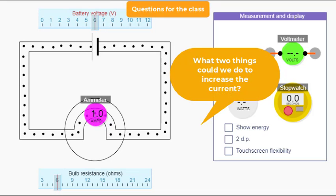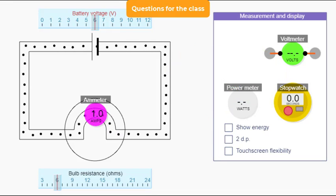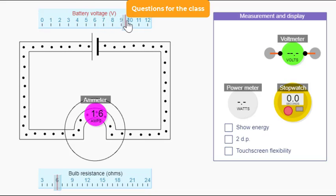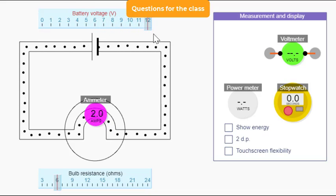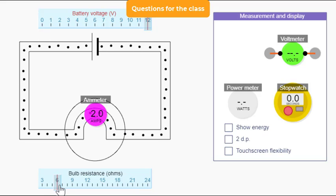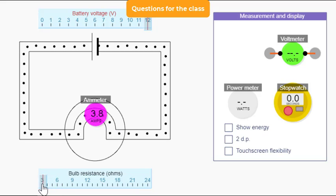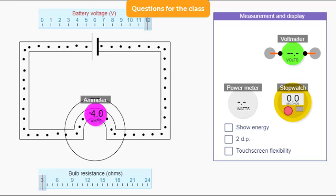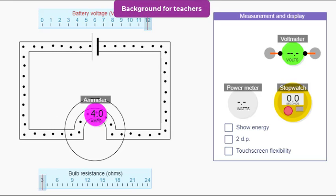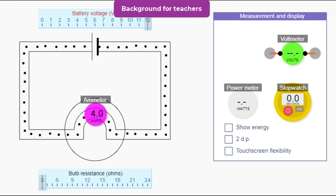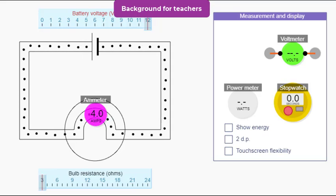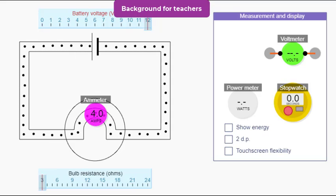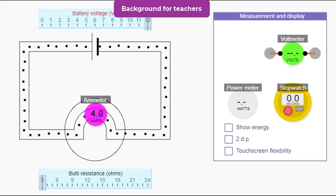What two things could we do to increase the current? We could increase the voltage of the power supply, or we could decrease the resistance of the bulb. An ammeter is a bit like a speedometer for charges — the faster the charge, the higher the reading. In fact, it's not quite as simple as that.